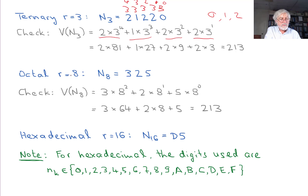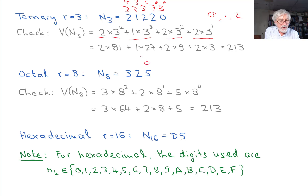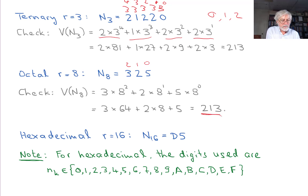For octal numbers (r=8), n sub 8 equals 325. We check the value: 3 times 8 squared (position 2), plus 2 times 8 to the 1 (position 1), plus 5 times 8 to the 0 (position 0). That is 3 times 64 plus 2 times 8 plus 5, which equals 192 plus 16 plus 5, which is again 213 in decimal.